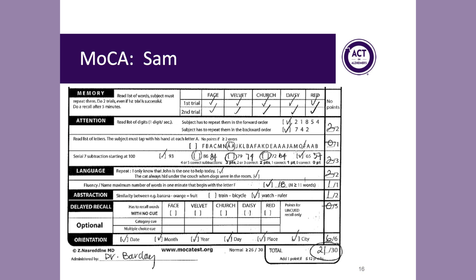When Sam was asked to remember the words given to him earlier, unfortunately he was not able to recall any of them and received zero points. For the last section, orientation, Sam answered all questions correctly and received six points. When all sub-components are added together, Sam's total score on the MOCA is 21 out of 30. Adding an extra point is not necessary because Sam has more than a high school education, so his final total score is 21 points.